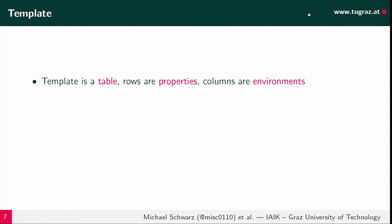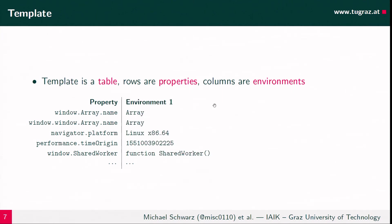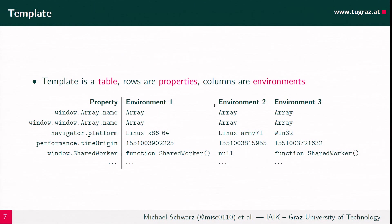We then have a list for one environment, and we start changing the environment — different operating system, different hardware configuration, different installed browser extensions — and repeat the measurement process. This gives us a huge table where the rows are the properties and the columns are the environments. A piece of that table might include properties like window.Array.name, navigator.platform, performance.timeOrigin, or window.SharedWorker, with different values across environments.